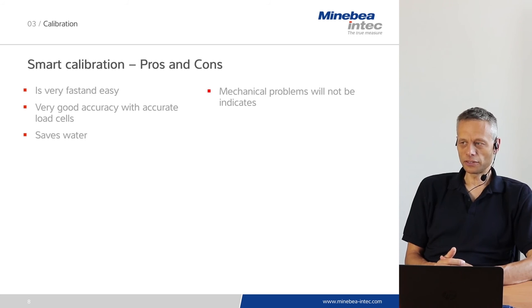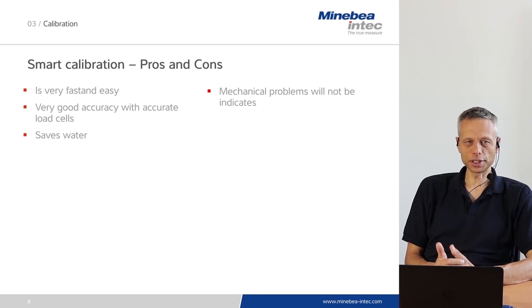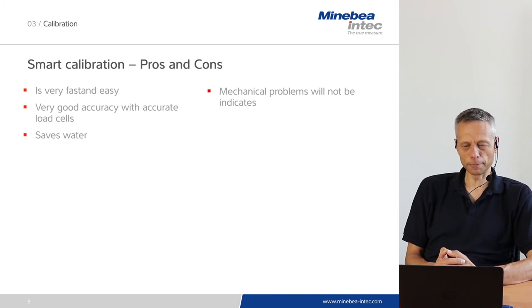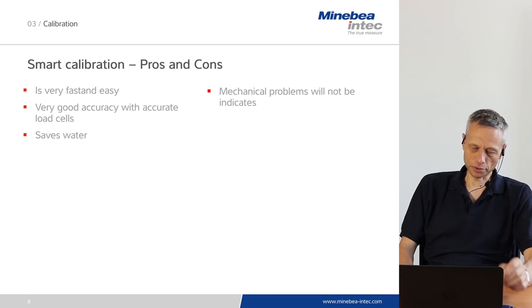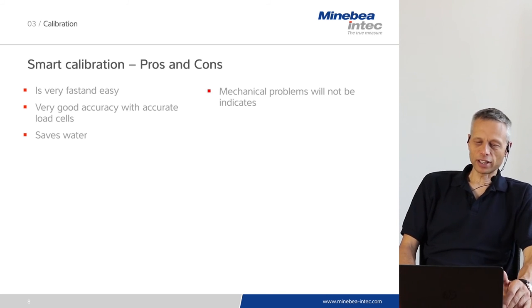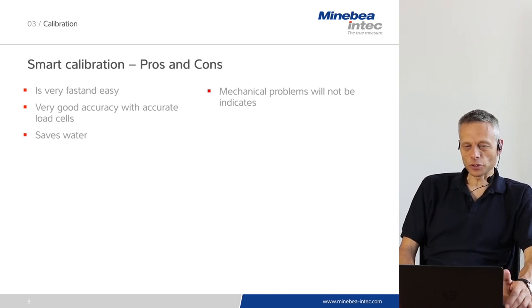Specifically, if constrainers are blocked, if load cells are not aligned properly, or if there is any hard connection of pipes to the vessel which can affect the weighing result, this will not be detected by the smart calibration method.